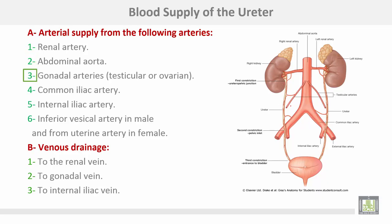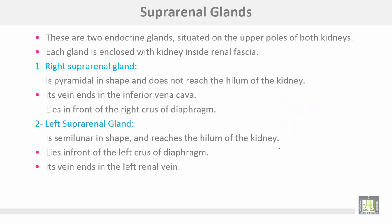The arterial supply of the ureter comes from the following arteries: from the renal artery, from the abdominal aorta directly, from the gonadal (testicular or ovarian) artery, from the common iliac artery, from the internal iliac artery, and from the vesical artery in males and the uterine artery in females. Venous drainage is to the renal vein, then the gonadal vein, then the internal iliac vein.